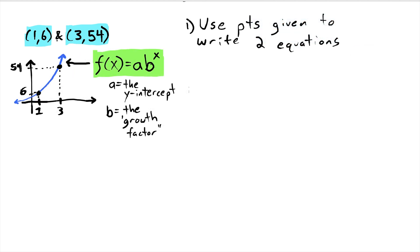So our first step is to use the points that were given to write two equations. Both of those equations are going to be based off this format f(x) = ab^x. And because f(x) and y are the same thing, we can use our points to create these equations. So now we have two equations.